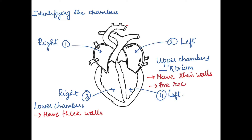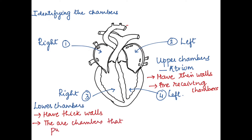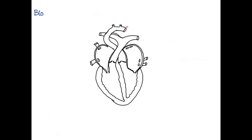In the lower chamber, the left side has a thicker wall as compared to the right side. The upper chambers are all receiving chambers, whereas the lower chambers are pumping chambers — they pump blood out of the heart. Now let us identify the blood vessels.